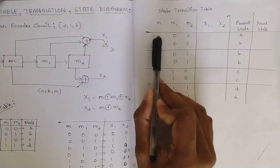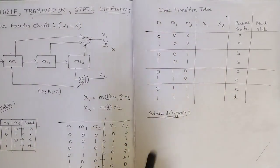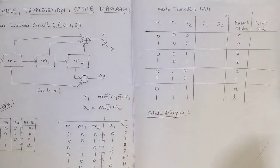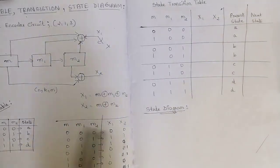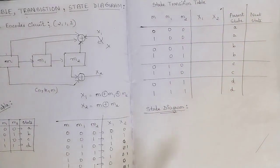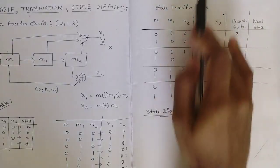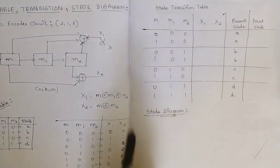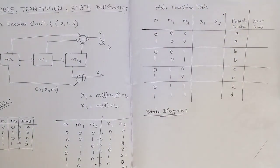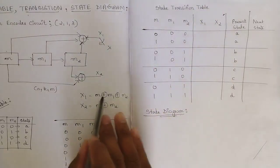For m=0 I have written one set and for m=1 another set. The present state is whatever state we have defined — so for 00 the state is A — and I have written A, B, C, D twice accordingly. Now we need to find the next states and outputs. Finding the output is straightforward: you write the expressions directly, so let us find the outputs first and then the next states.